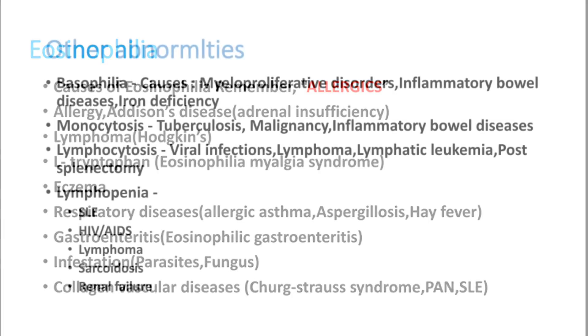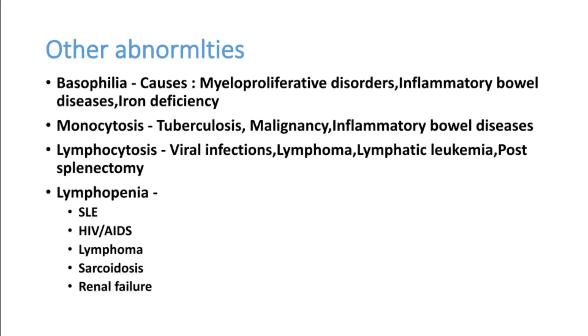Other CBC abnormalities: basophilia is seen in myeloproliferative disease, inflammatory bowel disease, and iron deficiency anemia. Monocytosis is associated with TB, malignancy, and inflammatory bowel disease. Lymphocytosis is mainly seen in viral infection. Lymphopenia is an important finding in SLE, HIV, lymphoma, sarcoidosis, and renal failure — notably, lymphopenia may be a classical presentation of occult SLE. This has been an overall picture of complete blood count interpretation. Thank you.